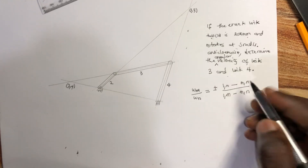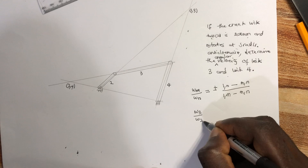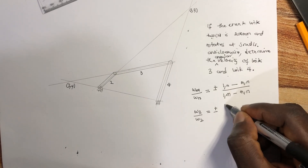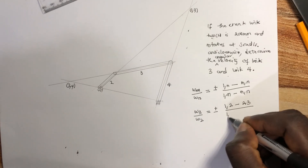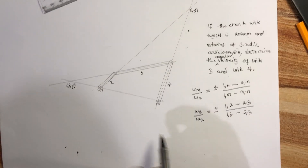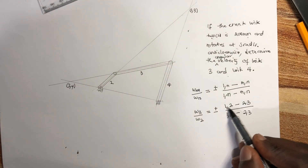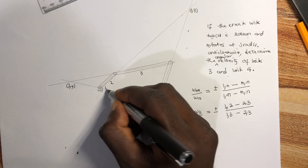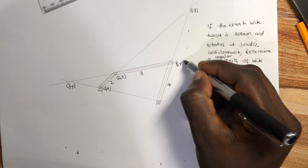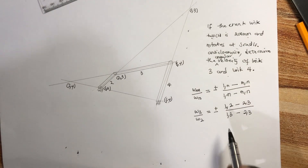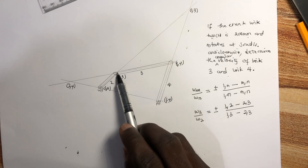Let's do link 3 first. Omega_3 over omega_2 will be equal to plus or minus (1,2) to (2,3) all over (1,3) to (2,3). Coming to our diagram, using the instantaneous center diagram, let me label the points: (1,2), (2,3), (3,4), and (1,4). So (1,2) is here and (2,3) is here.